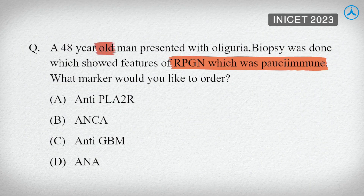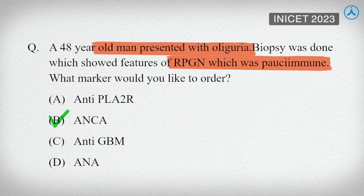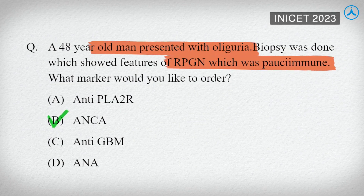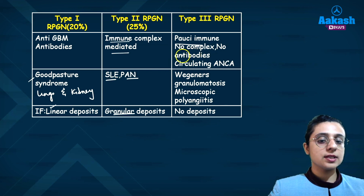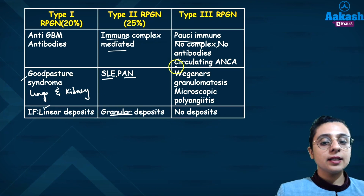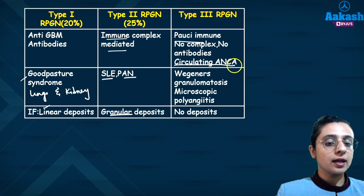In type III RPGN, it is pauci-immune. That means no immune complex is implicated in the pathogenesis, and it shows circulating ANCA.